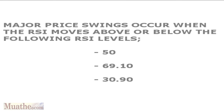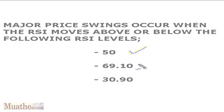I propose to you the following: major price swings occur when the RSI moves above or below certain key levels. You get a major price swing when we move below or above 50. You get a major price swing when you move above 69.10, and you also get a major price swing when you move above or below 30.90.